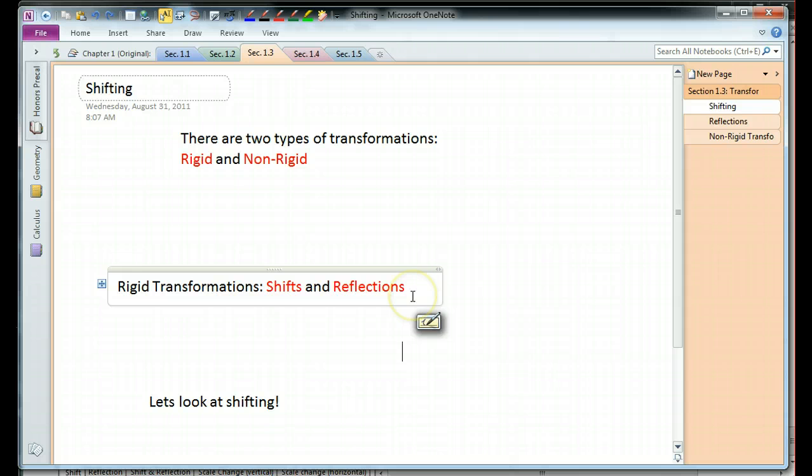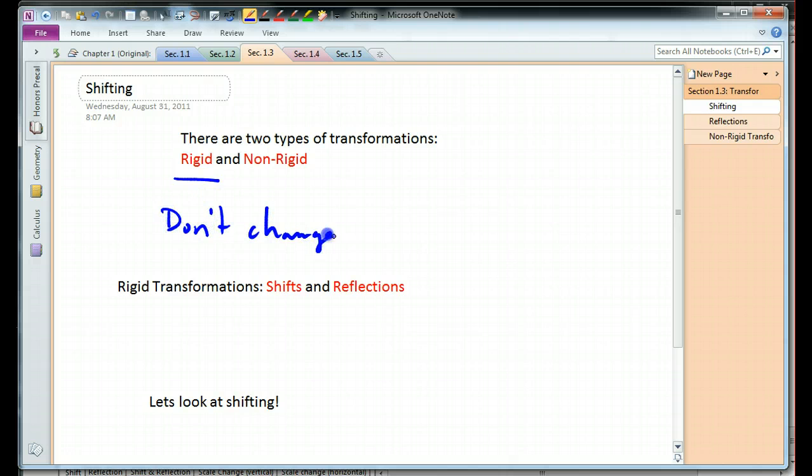Now there are two types of transformations, rigid and non-rigid. And the rigid don't change the shape of your function, whereas the non-rigid do change the shape of your graph. So, let's look at rigid transformations first. We've got shifts and reflections, and we're going to look at shifting.